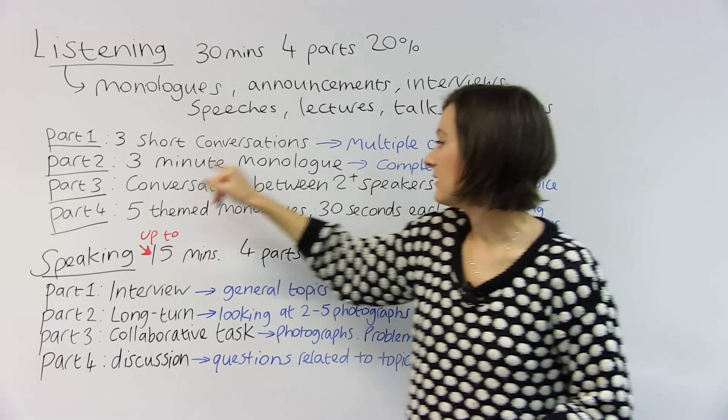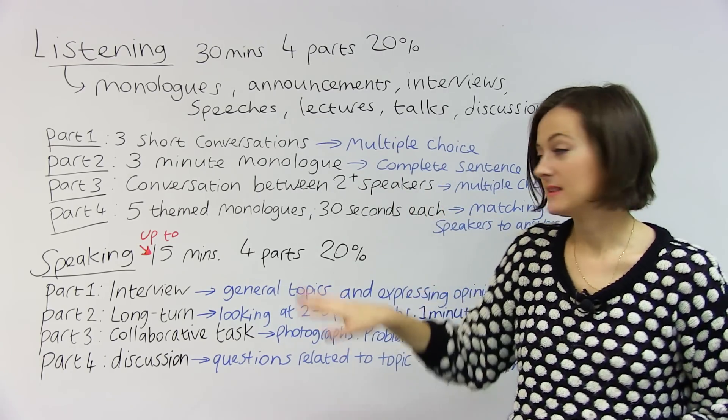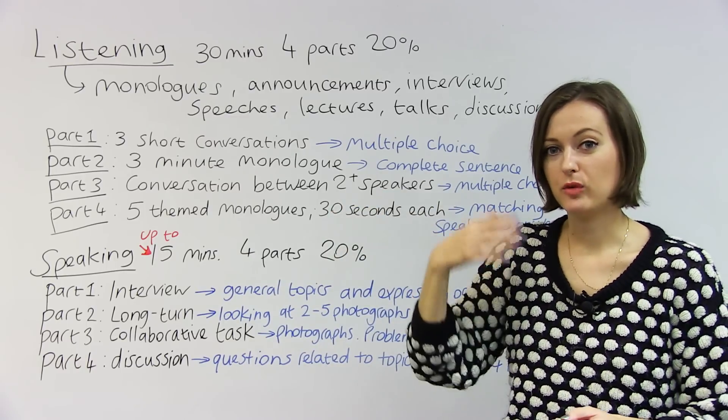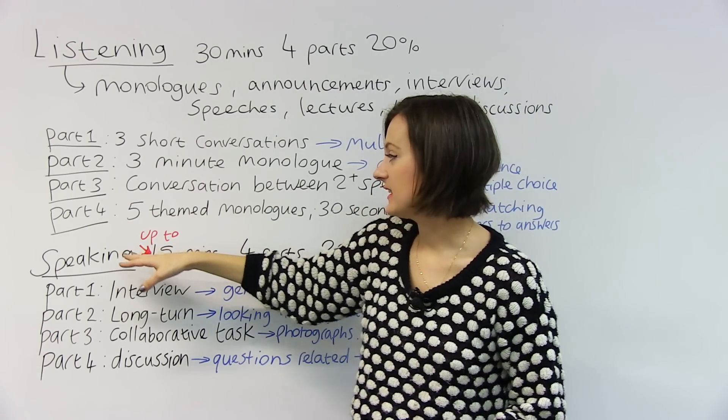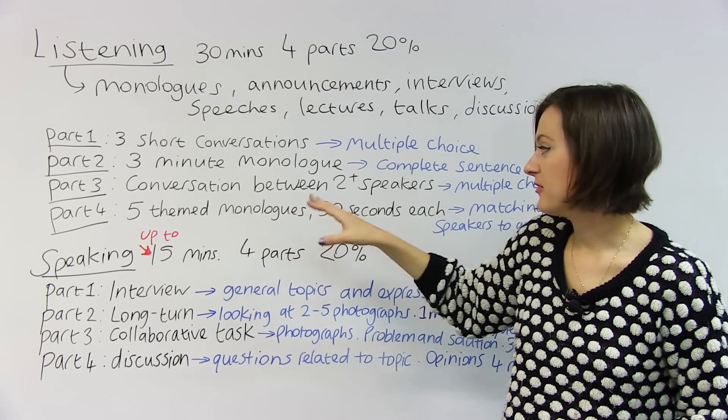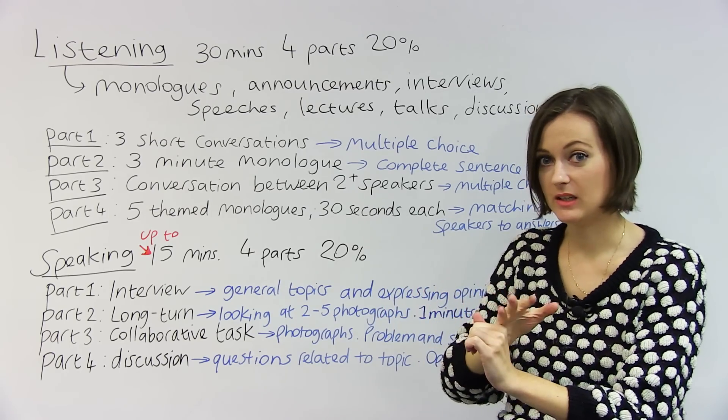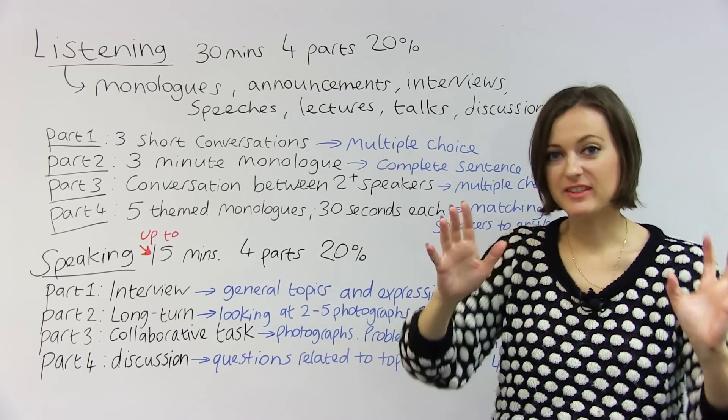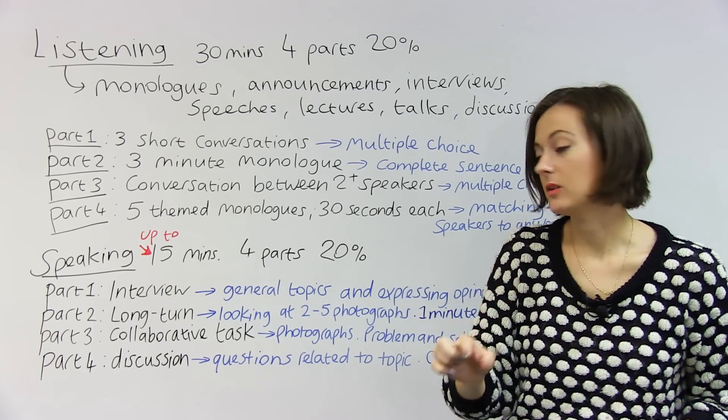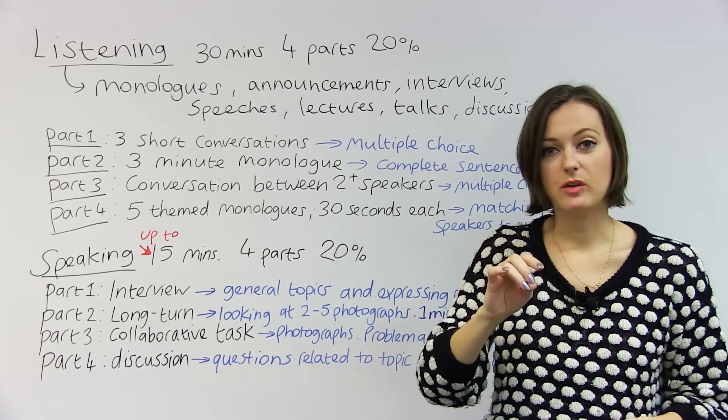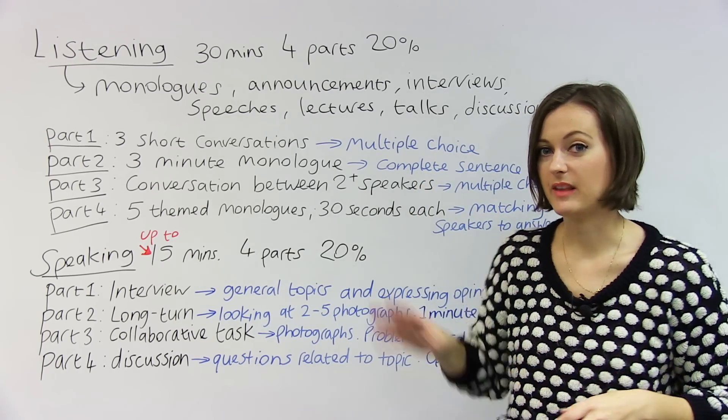Part three is a conversation between two or more speakers. This will be a multiple-choice. In this section, you'll particularly be listening for opinion, the opinion of the different speakers. And the last part of the listening test, there'll be five-themed monologues. So, five different people speaking about something separately, but it will have the same theme, the same general subject. They're short. They're just 30 seconds long. And to give your answers, you need to match the person to the right answer. So that one's the matching task.